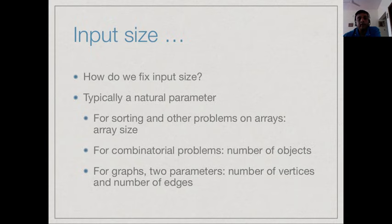For sorting arrays, what matters is how many objects there are to sort, so the size of an array is a natural notion of input size. For combinatorial problems, like loading items into a container and looking for an optimum subset in terms of weight or volume, the number of objects would be a natural input parameter.